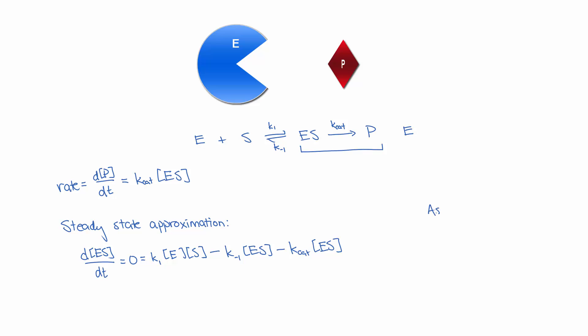As an aside, we know that however much catalyst we start with — E0, the starting concentration of enzyme — must equal however much free enzyme we have at a given point in time plus however much enzyme-substrate complex we have. Since enzyme is not created or destroyed, the free enzyme plus the enzyme-substrate complex must equal the original amount of enzyme added. So I'll solve for the concentration of free enzyme E: it equals E0 minus the concentration of the enzyme-substrate complex.